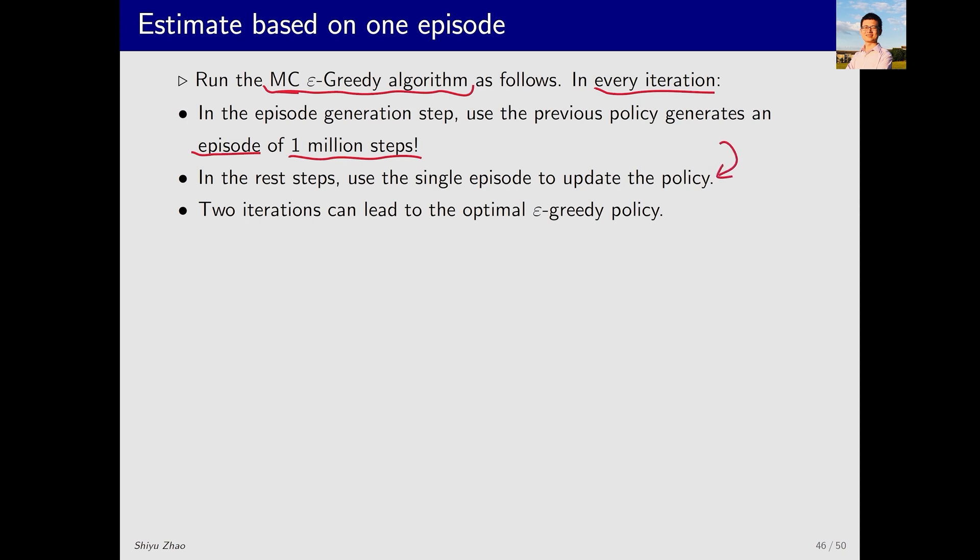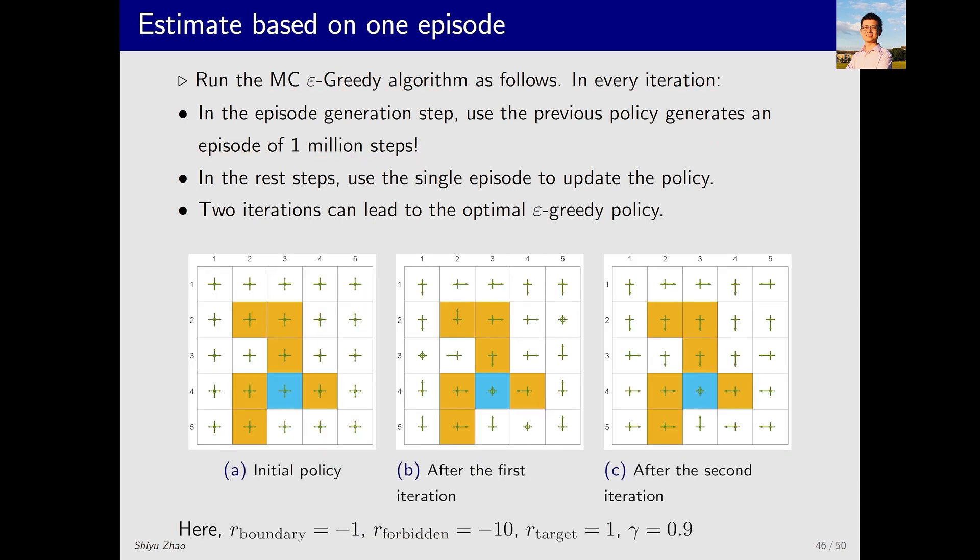Why do I do this? The purpose is to demonstrate that this algorithm indeed does not need the condition of exploring starts. As long as the episode is sufficiently long, even if it begins from a single state action pair, it can still visit all other state action pairs. Let's take a look at the results. This is the initial policy, which is clearly not optimal since it assigns the same probability to all actions in every state.